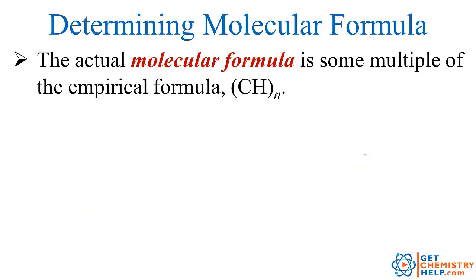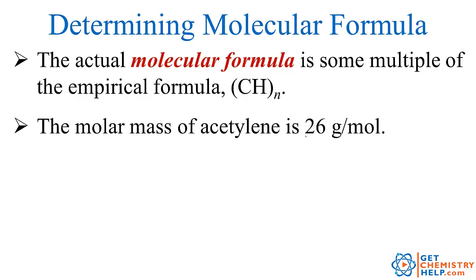That's the empirical formula. To find the molecular formula, we know it has to be some multiple of CH. It could be CH, or C2H2, C3H3, C5H5, etc. The way we figure out what that multiple is, is by being given the molar mass. The molar mass is always the mass of the molecular formula. This mass can be compared to the mass of the empirical formula — if it's the same, they're equal; if it's twice, the molecular formula is twice the empirical formula.